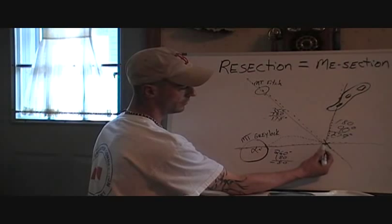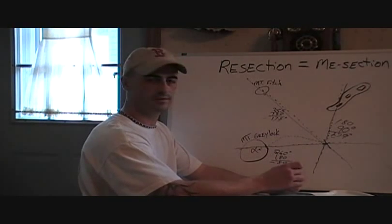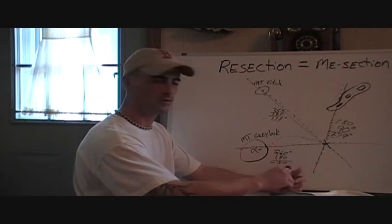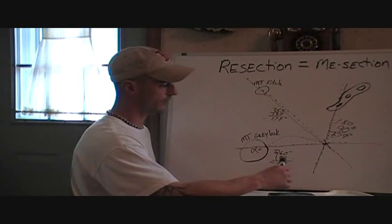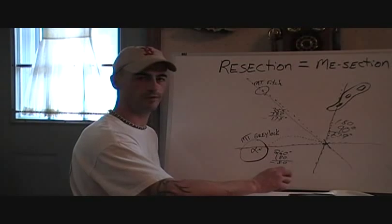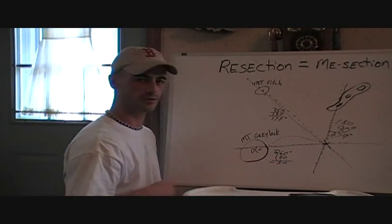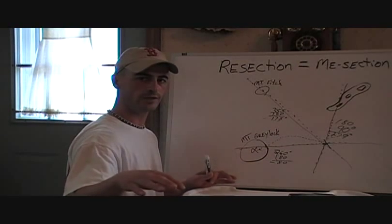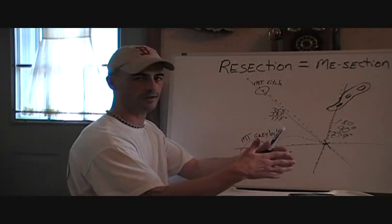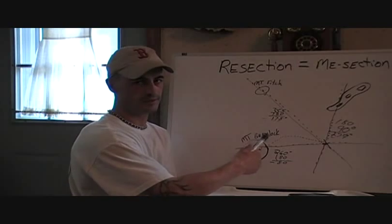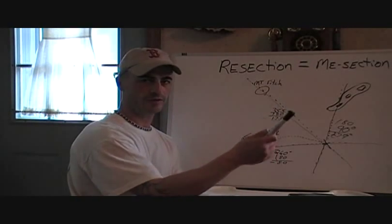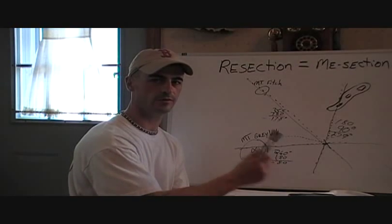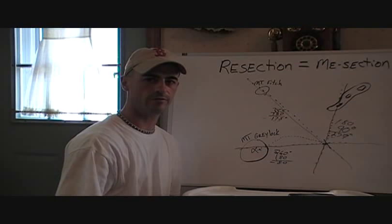Draw those lines on the map and that gives us our location — and that's resection. Again, resection is me-section; we're trying to find out where we're at on the map. Resection is just azimuths from known locations to an unknown location, finding the intersection where they all come together. You shoot azimuths to two or more known locations and use the back azimuth to find where you're at on the map. Thanks for joining me, and we'll be back with another video in the series.